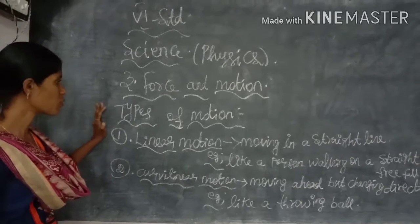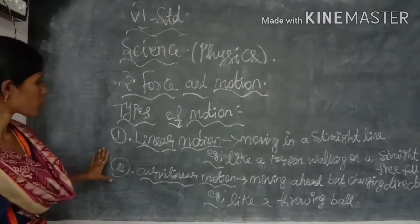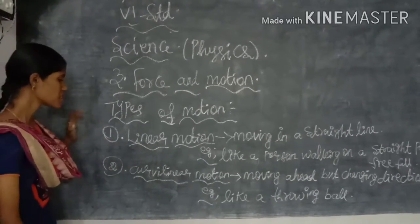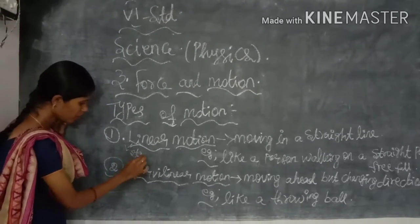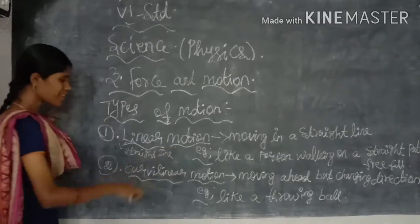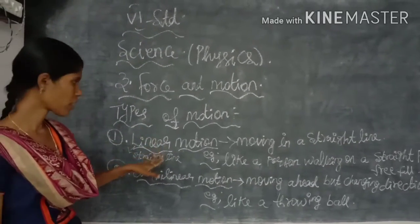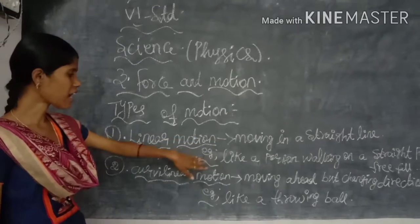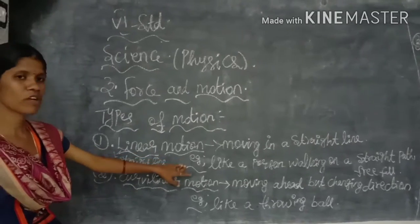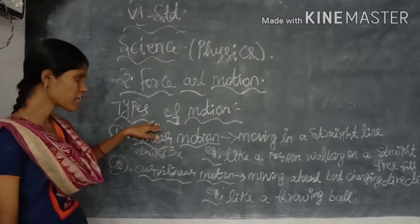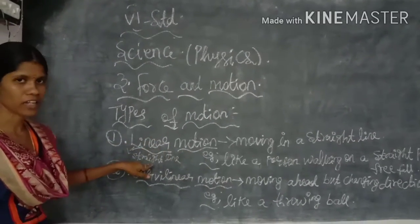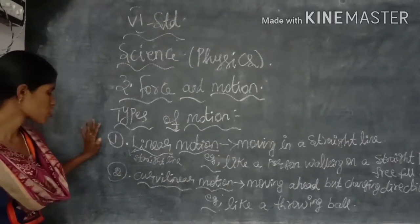To continue that lesson, now we are going to learn about the types of motion. The first one is linear motion. Linear means it refers to the straight line — anything that has to be traveled in a straight line. For example, a person walking on a straight path, or free fall motion. That is referred to as linear motion.